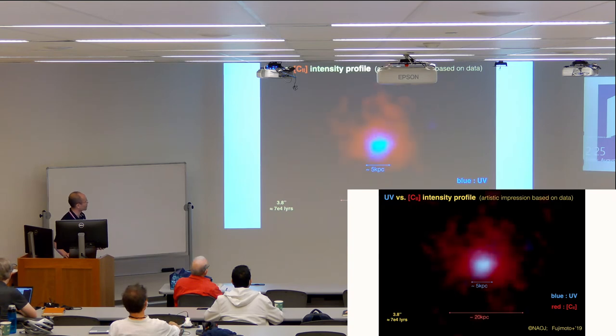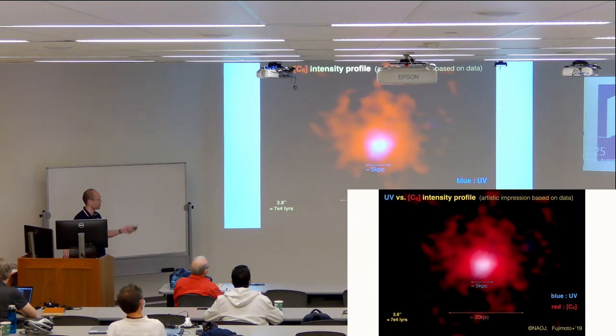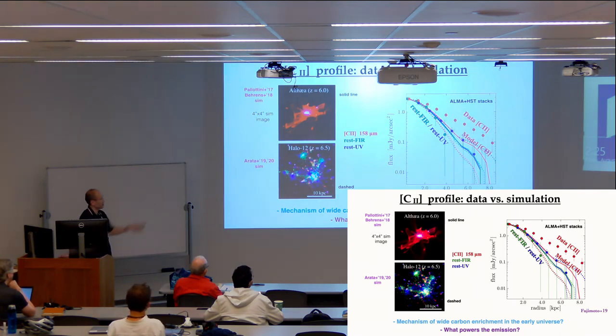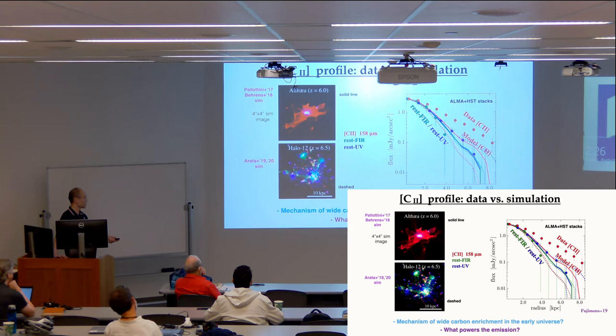One result that's interesting to look at is UV versus carbon 2. In a paper by Fujimoto 19 they discovered there's a significant difference between HST stacking UV light versus the carbon 2. This red part is the extended carbon 2 line. When you look at this in terms of data, the carbon 2 line has a very extended shallow tail relative to the two simulations that we compared against. Here's RAMSES-ILCEA simulation from the Italian group and the bottom one is SPH simulation from our group. Both simulations actually failed to produce these very extended tail to the outskirts. This may suggest that we might be still missing some kind of mechanism of wide carbon enrichment in the early universe. Also what powers the emission is an interesting question that we need to answer.